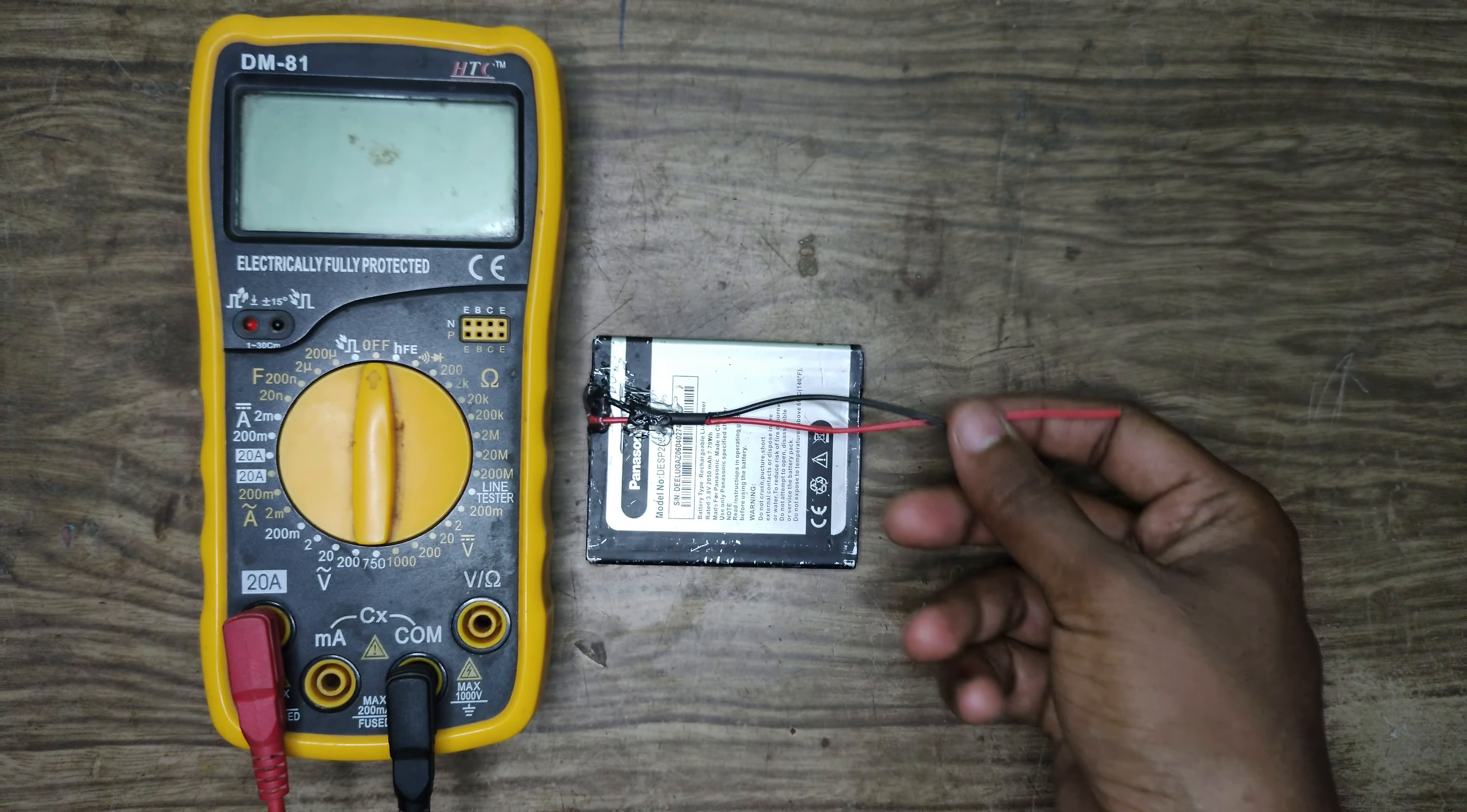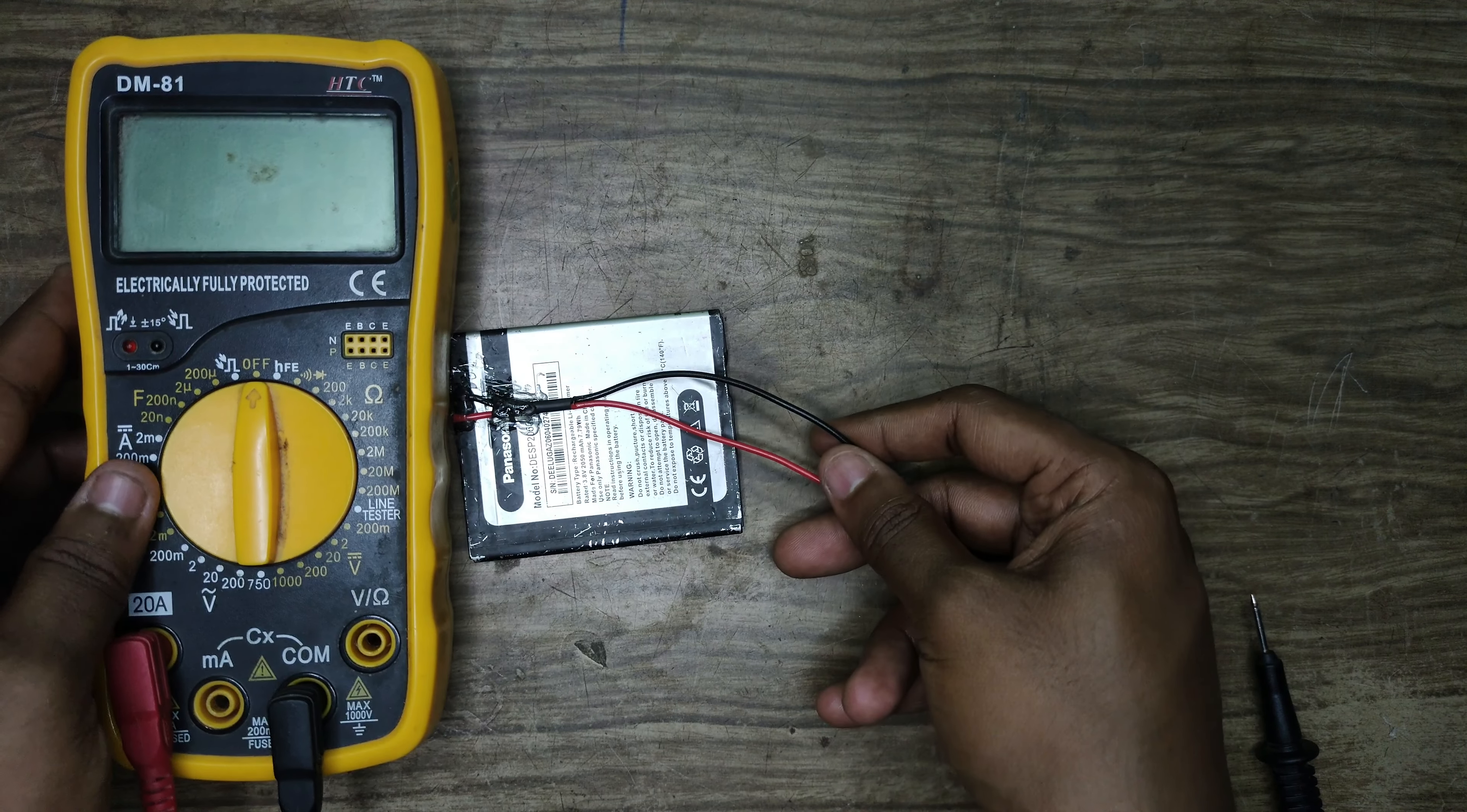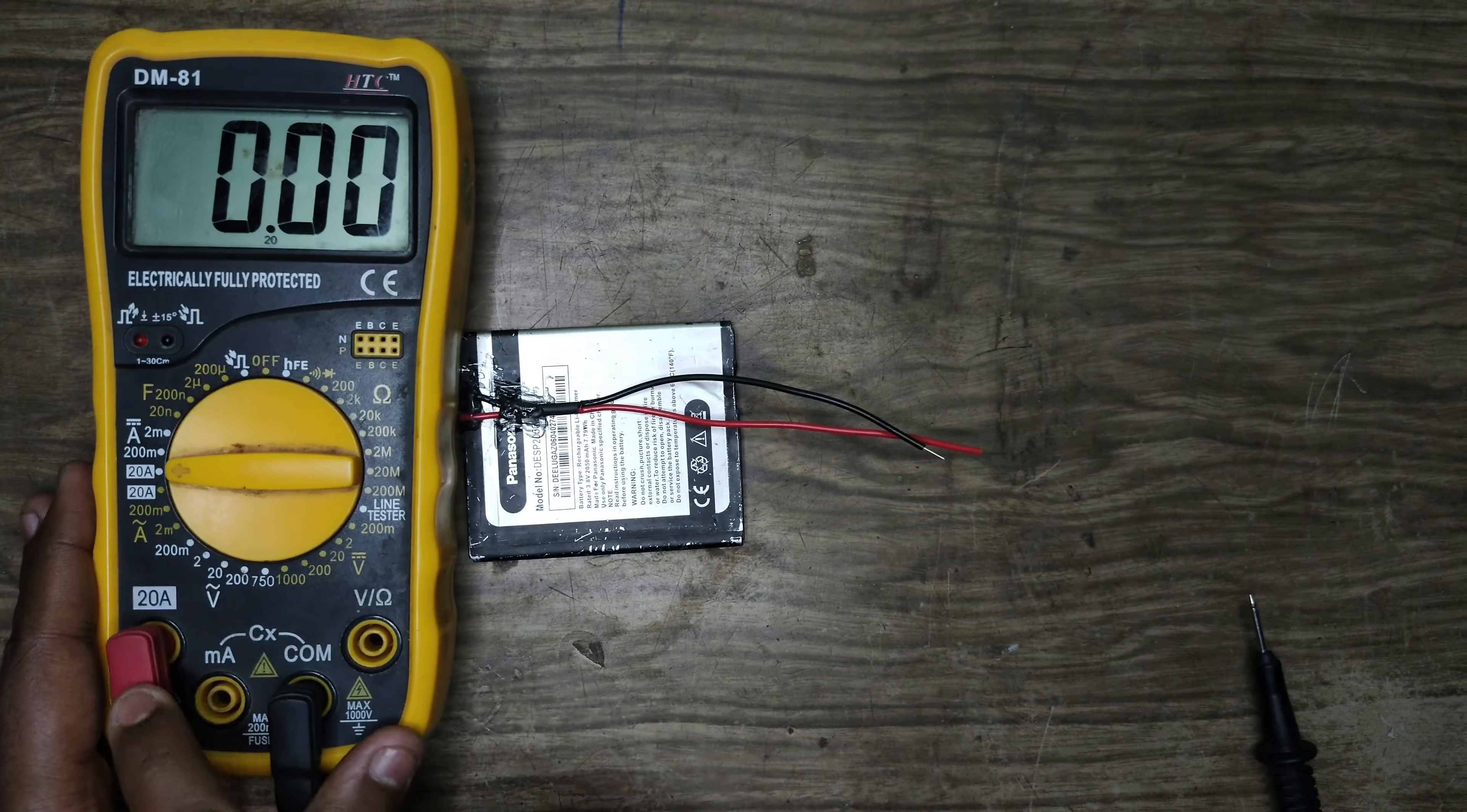You can see I have a 3.7V battery. Now you can see the multimeter is set to DC current in 20A mode.